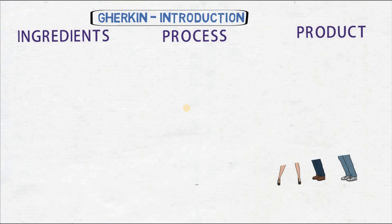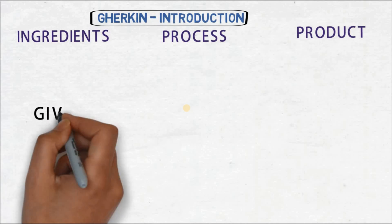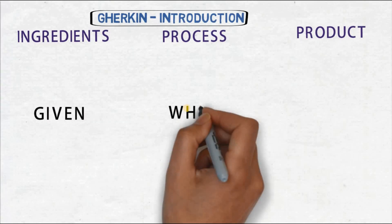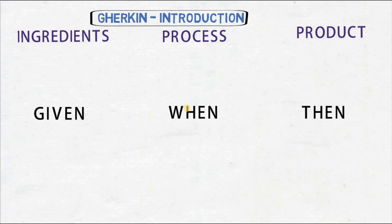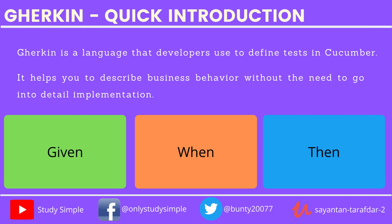If we draw an analogy to coding: the ingredients map to 'Given,' the process maps to 'When,' and the end product maps to 'Then.' Given means what we have, When means what actions we are going to perform, and Then means what end product we are going to have. Gherkin is the language that developers use to define tests in Cucumber. Cucumber is a BDD framework — we will learn about it later.